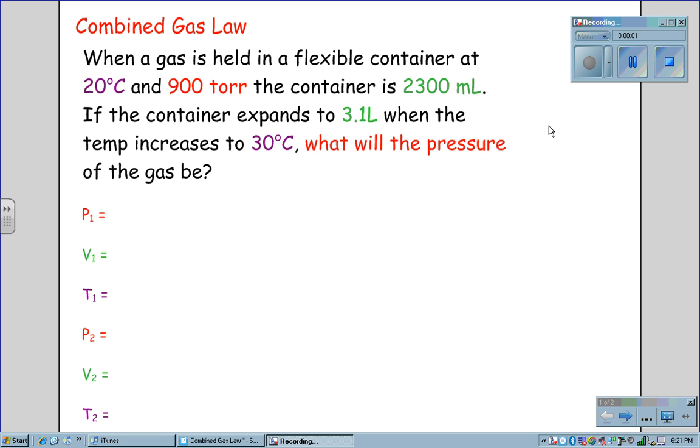The Combined Gas Law. When a gas is held in a flexible container at 20 degrees Celsius and 900 torr, the container is 2,300 milliliters. If the container expands to 3.1 liters when the temperature increases to 30 degrees Celsius, what will the pressure of the gas be?